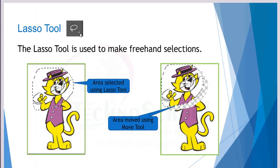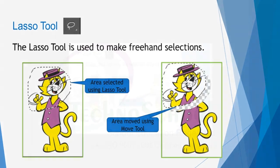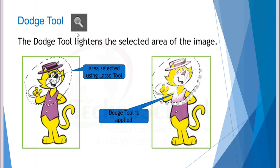The next concept is the lasso tool. You can find it from the toolbox — it is a freehand selection tool. You select an area using the lasso tool, and after that, using the move tool, you can move the image as you wish. Within the toolbox we also have the dodge tool. The dodge tool is used to lighten a selected image area. After making a selection using the lasso tool, you can apply the dodge tool to lighten the image.